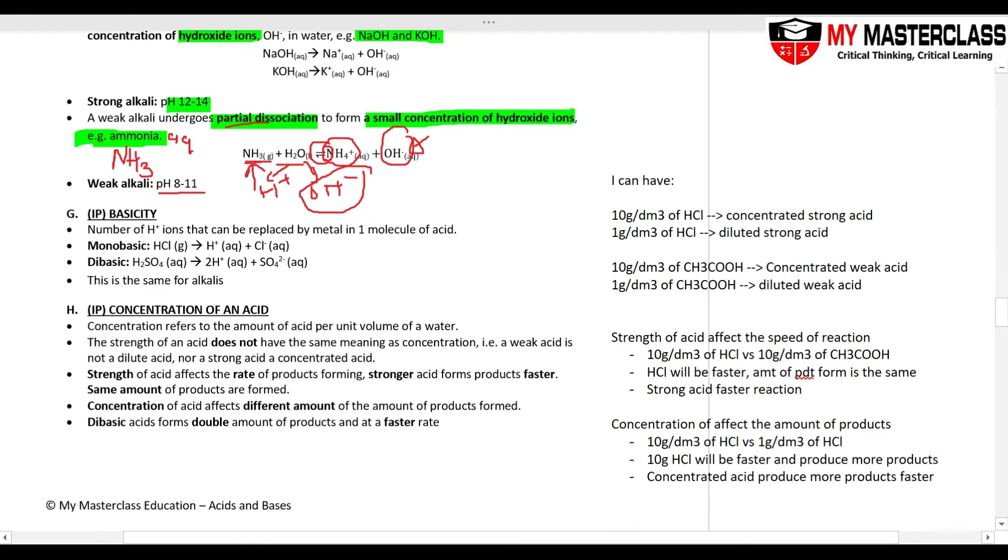Next idea, we have basicity, number of hydrogen ions that can be replaced by metal in one molecule of acid. So remember when you write chemical equation, for example, sodium plus HCl. Always take the metal, kick the H+. So how many H+ can be kicked out?